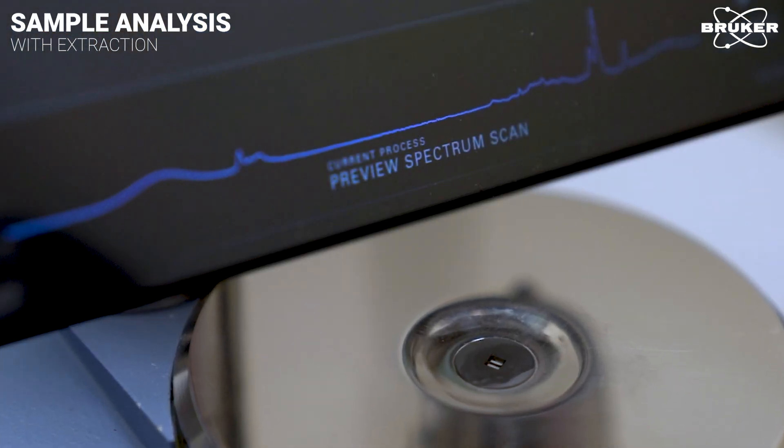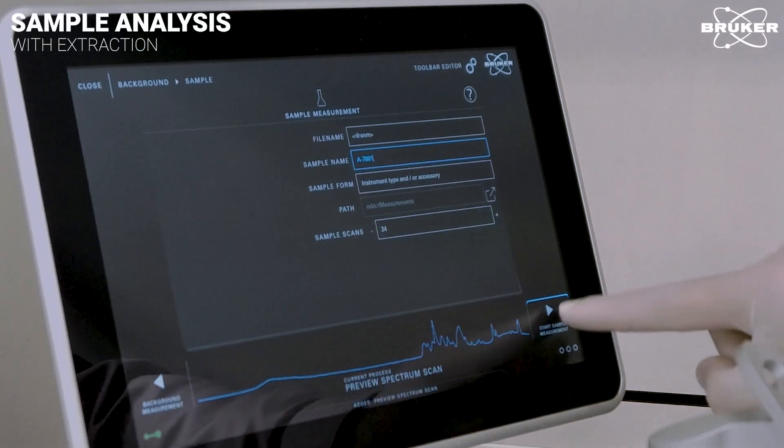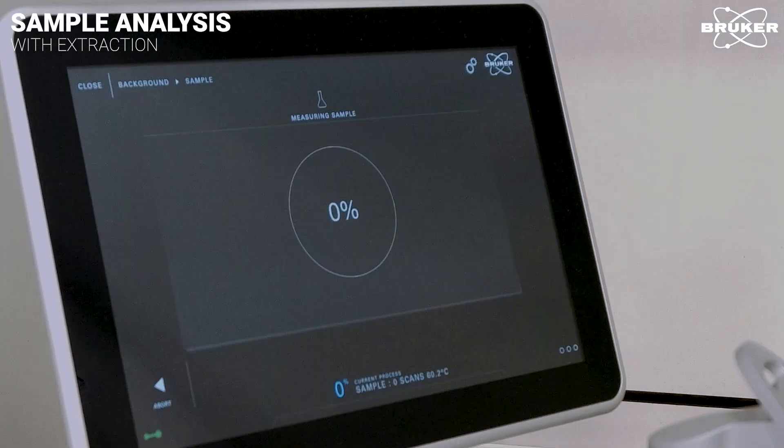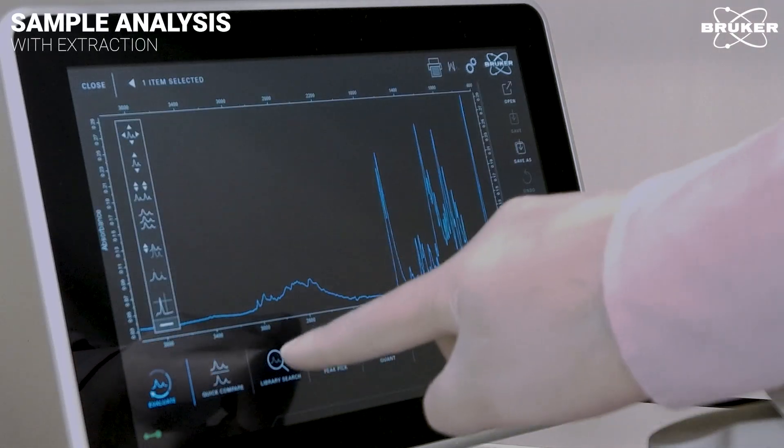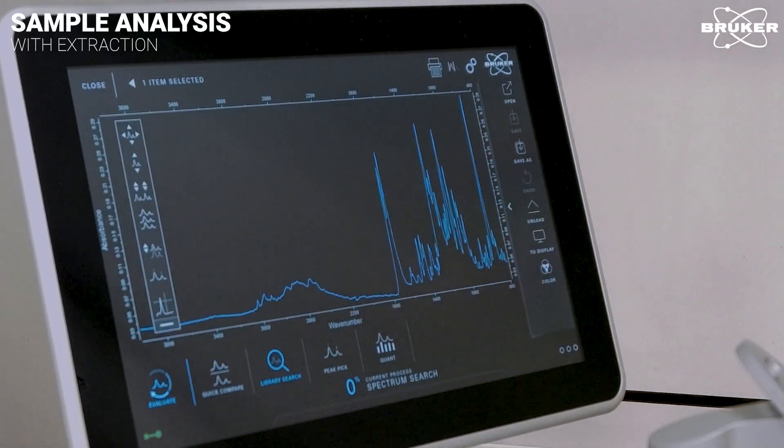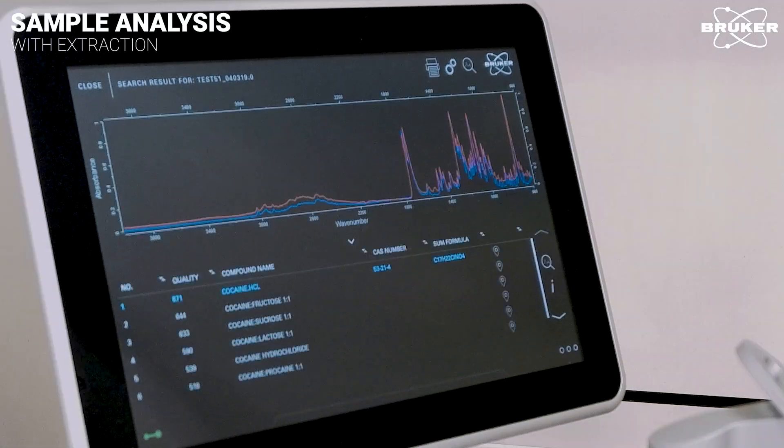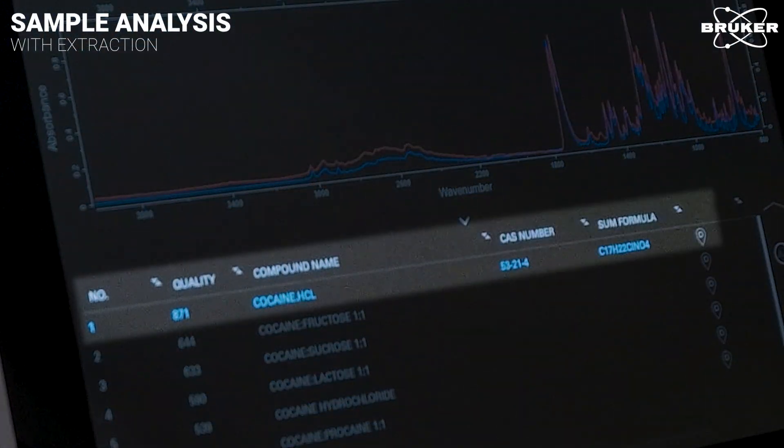The IR preview lets us know when the solvent is completely evaporated and we can start the measurement. Now, all it needs is one click. After analysis, the IR spectra window opens and by performing a library search we get the result. Cocaine hydrochloride.